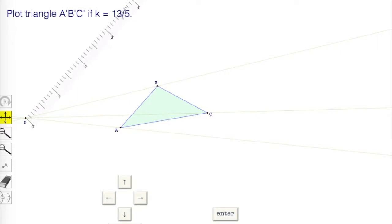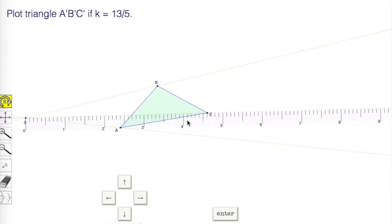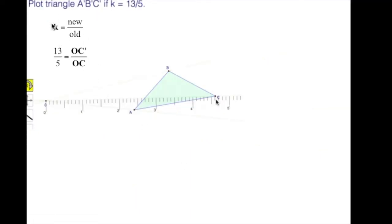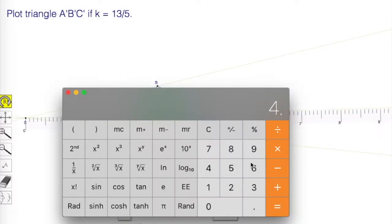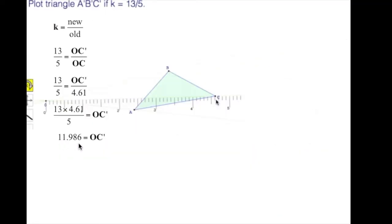For this one, your K factor is 13 fifths. I'm going to measure from 0 to C. That gives me 4.61. The ratio of similarity is new over old, and the K is 13 over 5. We've measured OC. So we're looking at OC prime as our new and OC as our old. And OC, we measured it as being 4.61. Cross multiply the 4.61 times the 13, and divide by 5. 4.61 times 13 fifths. So 13 divided by 5 is 11.986.